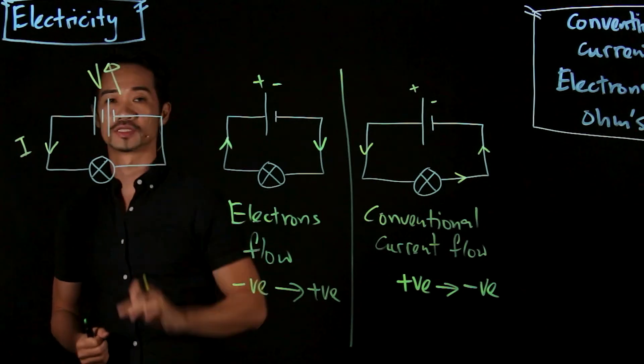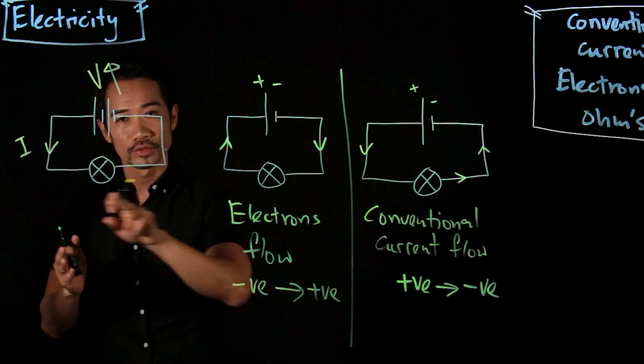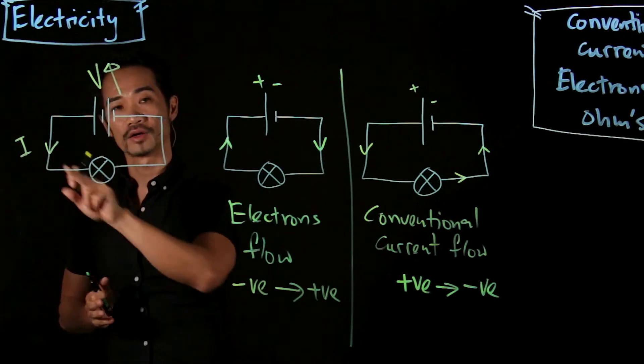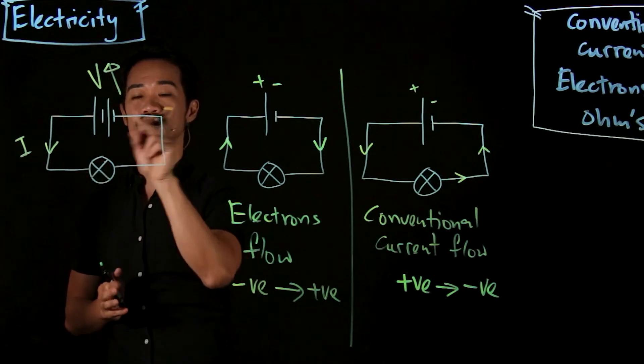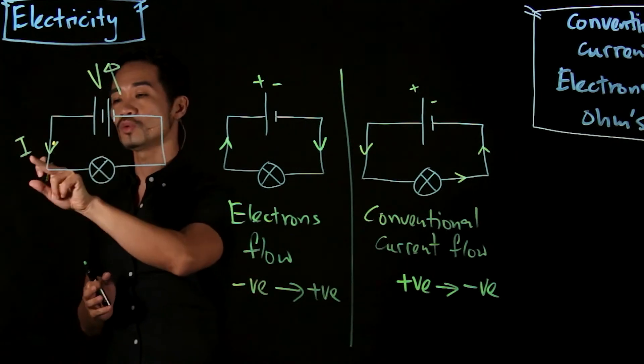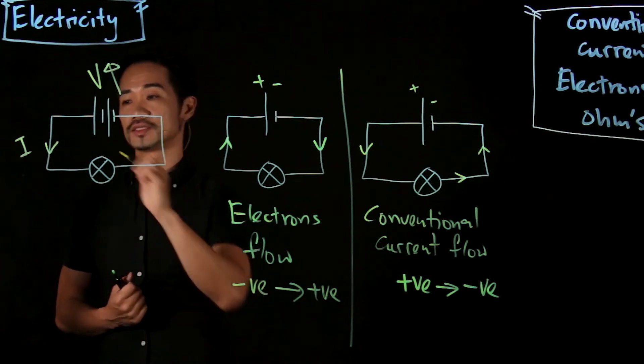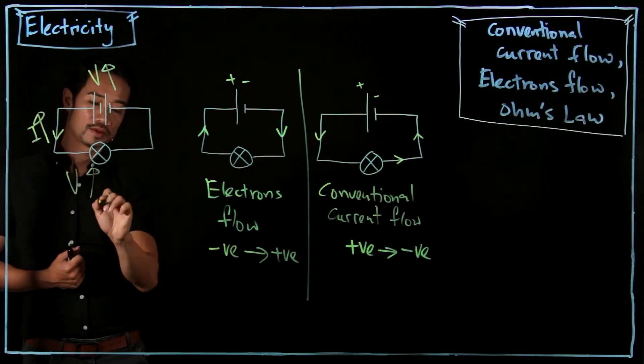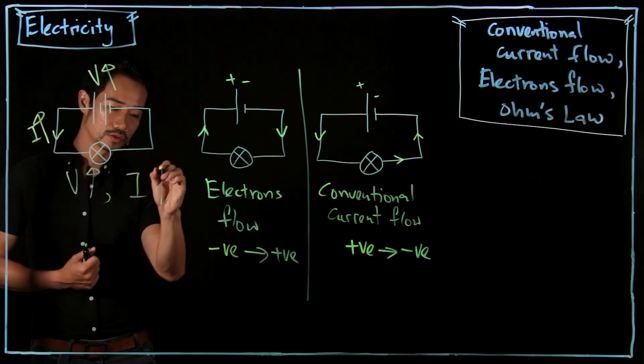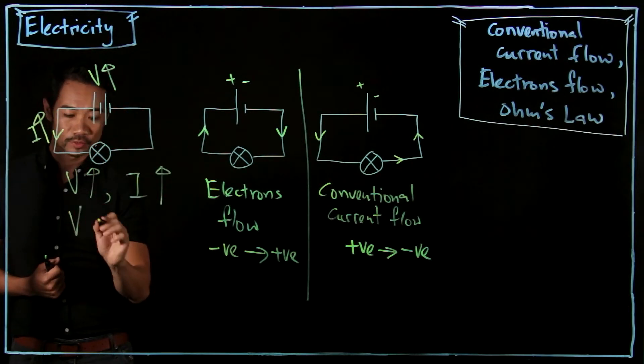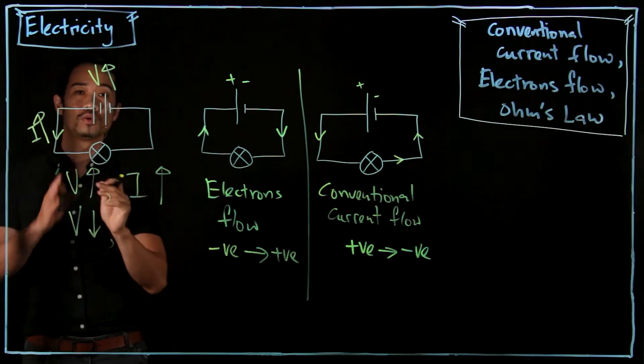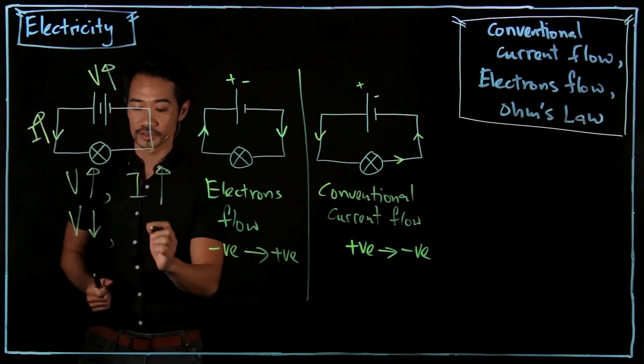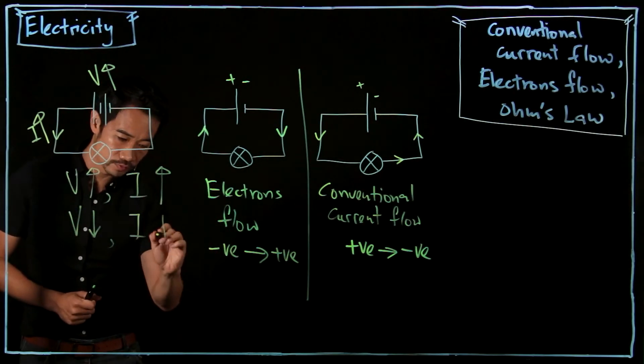So when V increases, what will happen to the rate of flow of charge? Will current flow faster? Will charge flow faster? Will current be higher or lower? Yes, it will be higher. So when V increases, I will increase. Conversely, when V decreases, when you have a lower electromotive force, or lower potential difference, current will decrease.